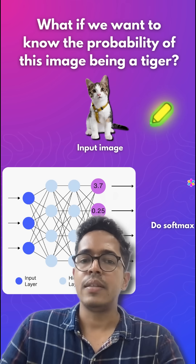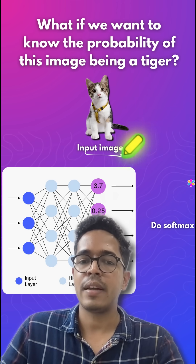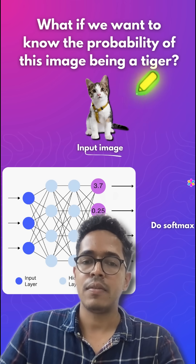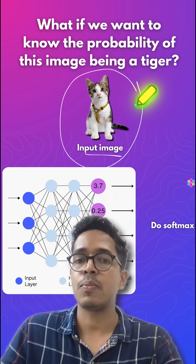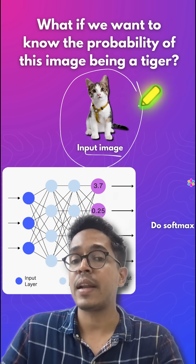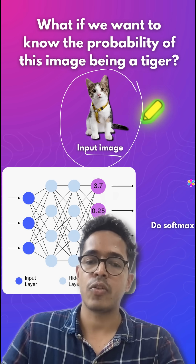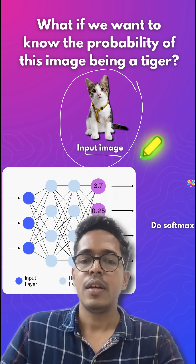But how can we make this into a probability distribution? Is it possible to say that this image, which actually looks like a cat, has a small probability to be a tiger? This is where softmax comes into the picture.